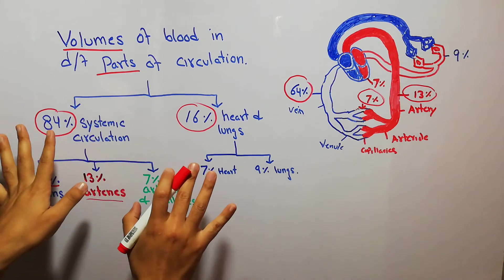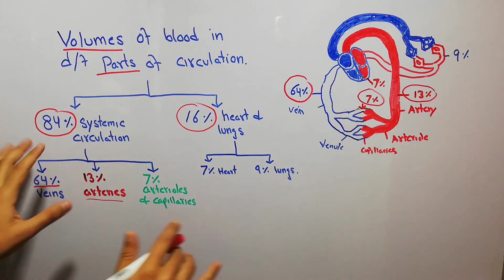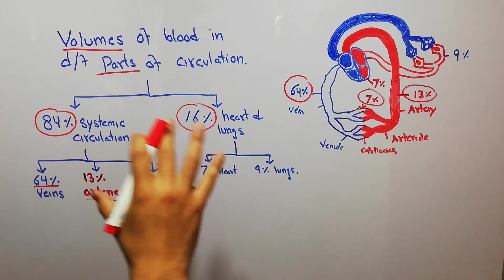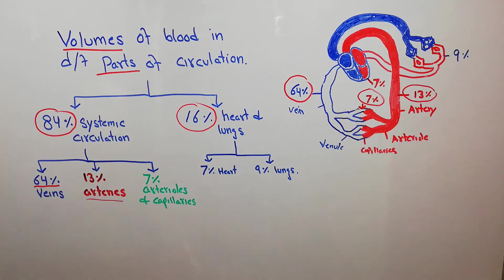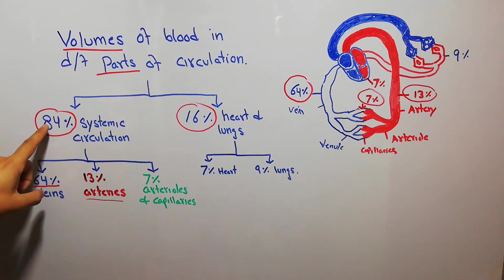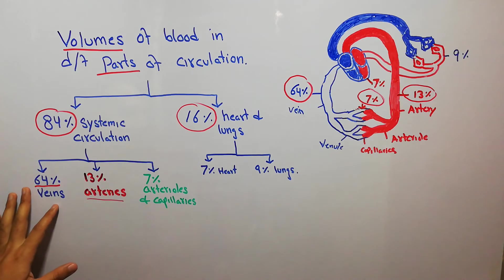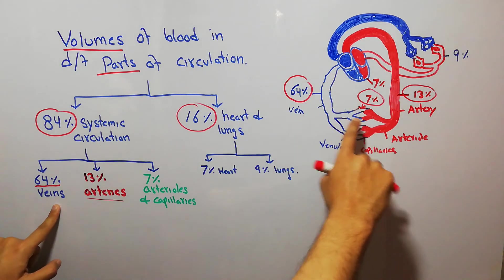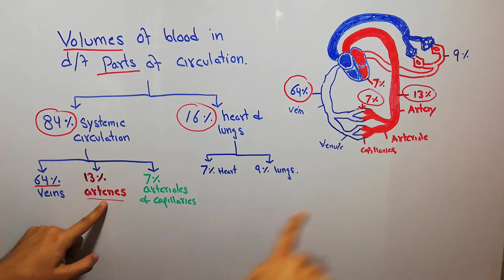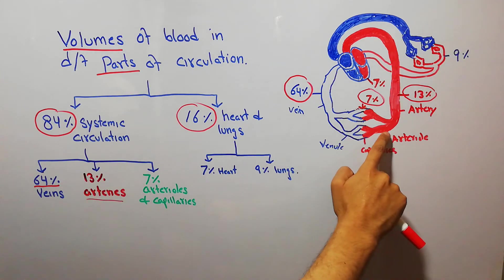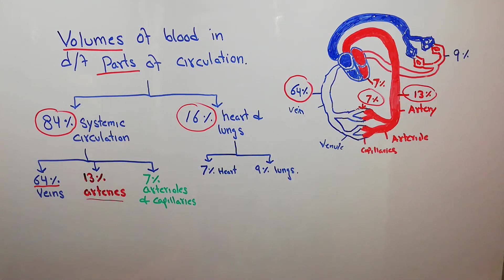To summarize: blood volume is divided into systemic and pulmonary circuits. In the systemic circuit it's about 84%, and in the heart and lungs — which make up the pulmonary circuit — it's about 16%. Out of the 84% in systemic circulation, the biggest volume is in the veins at about 64%, 13% is present in the arteries, and 7% is present in the arterioles and capillaries.